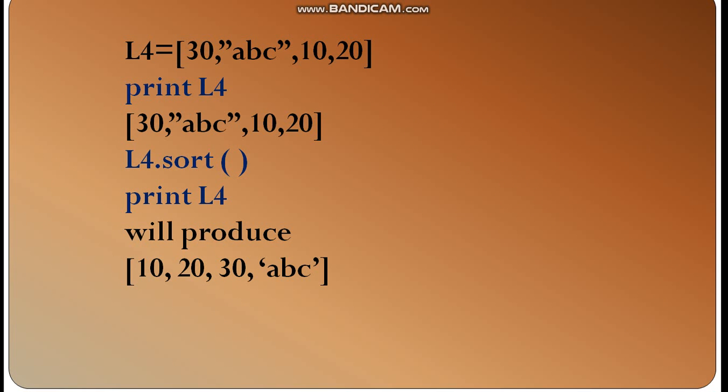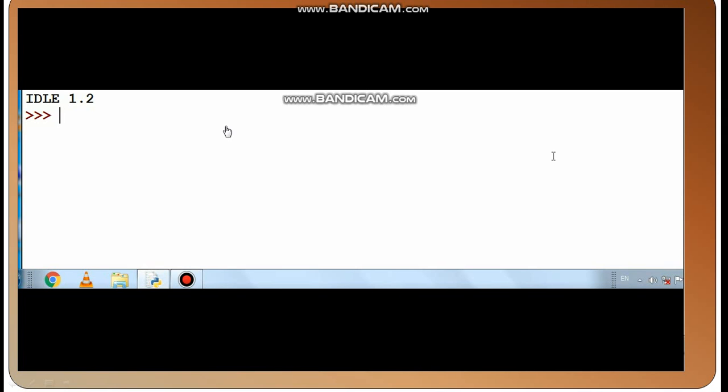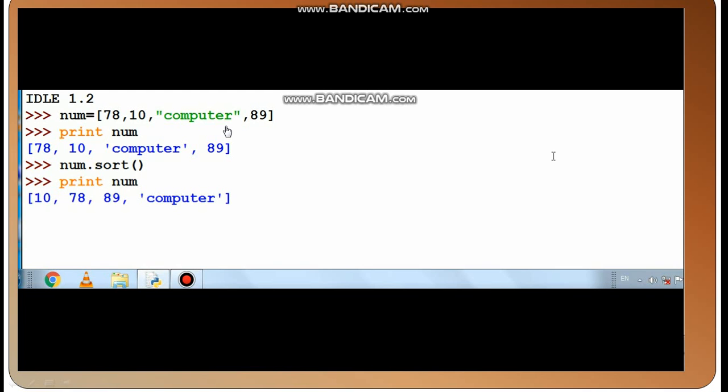Next, if we give numbers and strings in combination, first we will sort them. We have numbers 78, 10, and computer which is a string. When we display it and then sort it, if we print it, we will sort the numbers and then the strings.